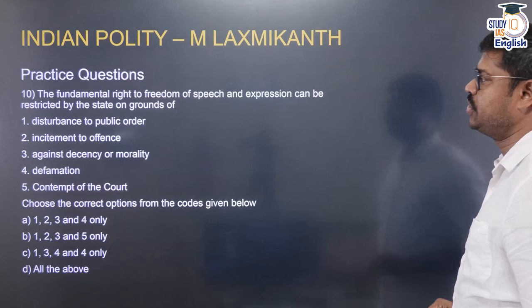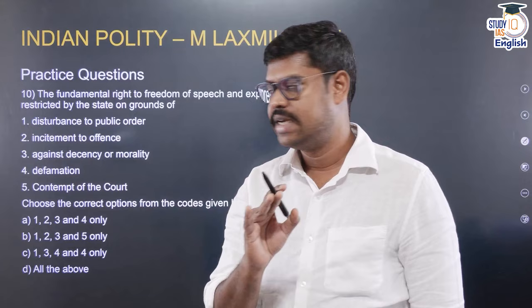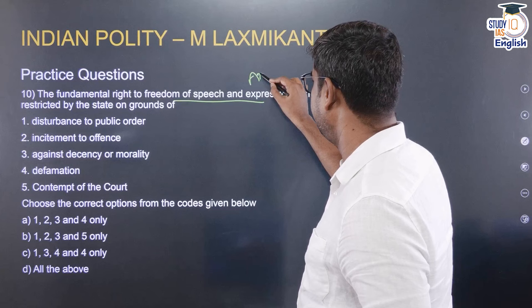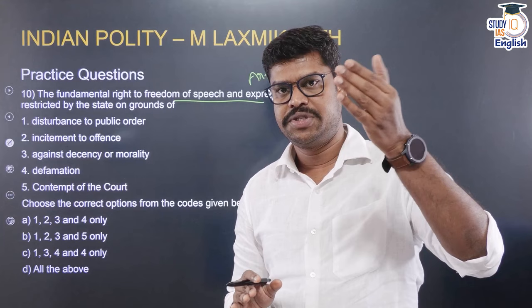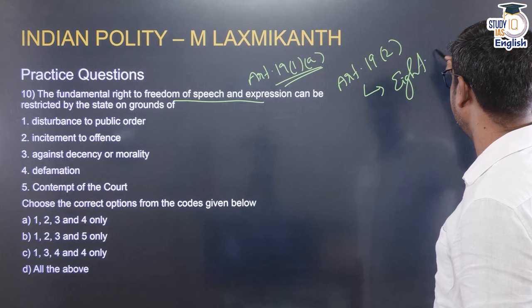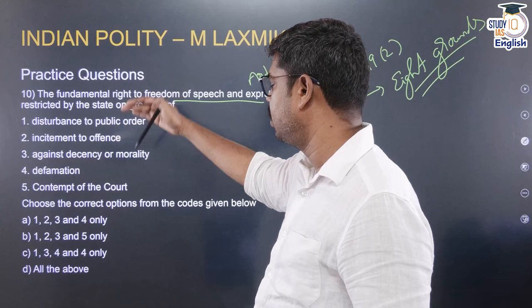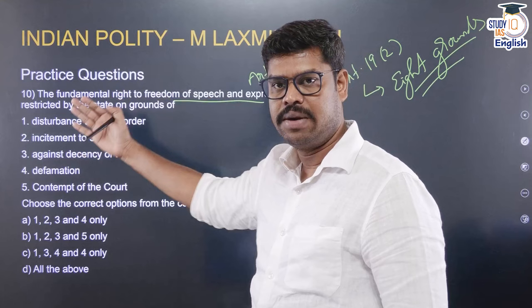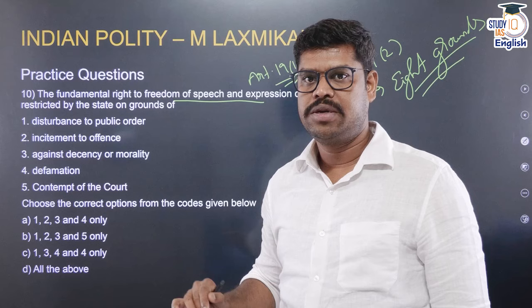Question 10: The fundamental right to freedom of speech and expression guaranteed under Article 19(1)(a) is given to all citizens, but it is not an absolute right. This right can be restricted on 8 grounds as per Article 19(2). You should remember what these 8 grounds are. Among the options — disturbance to public order, incitement to offense, against decency and morality, defamation, contempt of court — which are part of these 8 restrictions and which are not? Put your answers in the comment box.